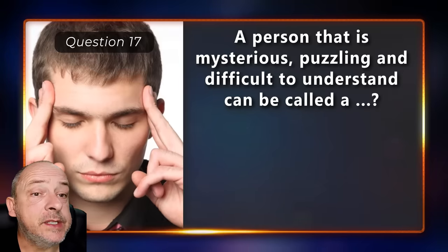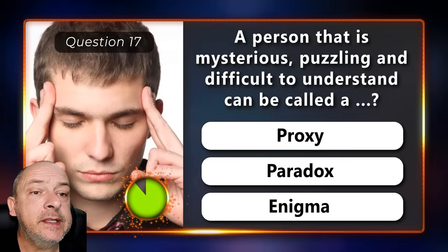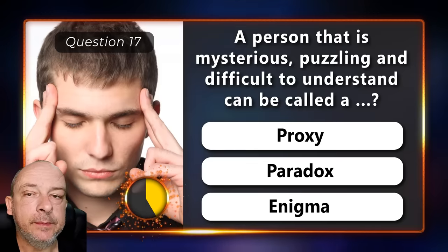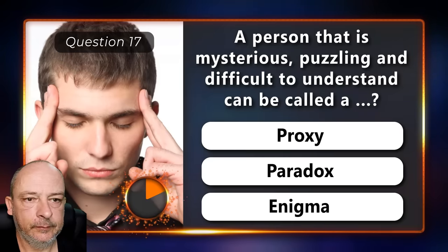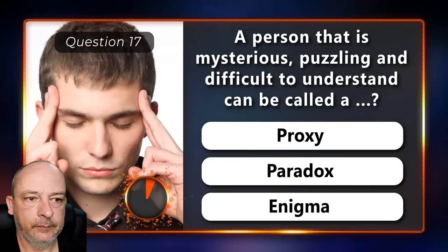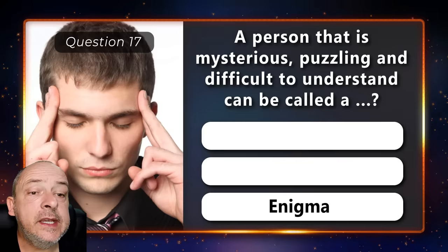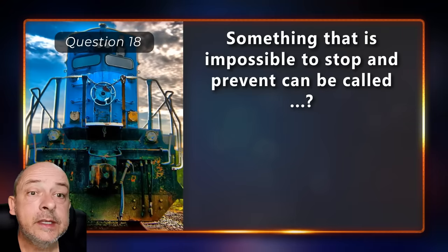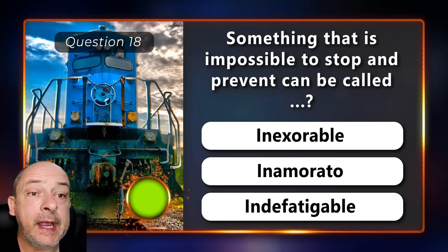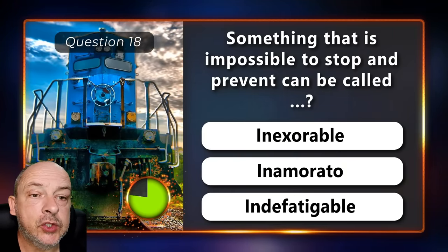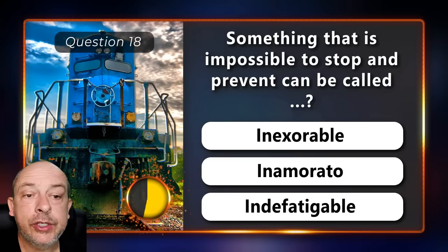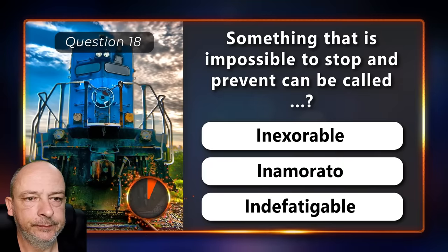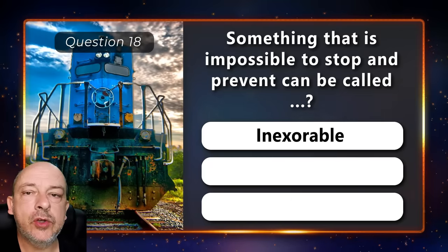A person that is mysterious, puzzling, and difficult to understand can be called a proxy, a paradox, or an enigma? The answer is enigma. Something that is impossible to stop and prevent can be called inexorable, innamorato, or indefatigable? Inexorable.